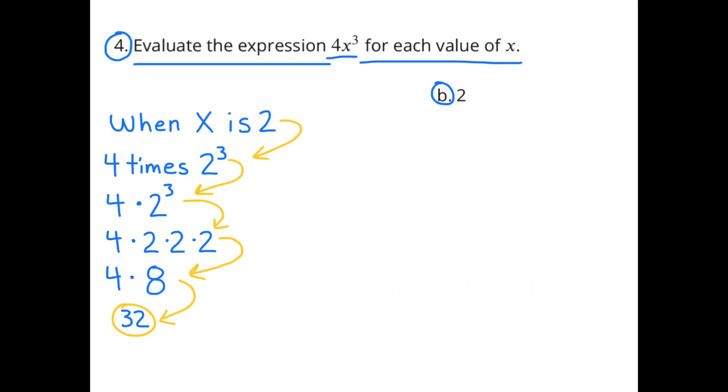B. When the value of x is 2, you're going to substitute the x with a 2. So you'd have 4 times 2³, and 4 times 2³ is 4 times 2 times 2 times 2. Since 2 times 2 times 2 is 8, you'd multiply 4 times 8, and that would equal 32. So when the value of x is 2, 4x³ is equal to 32.